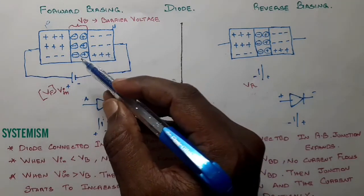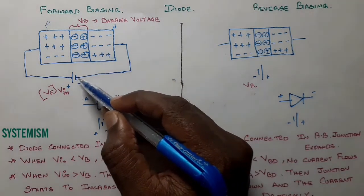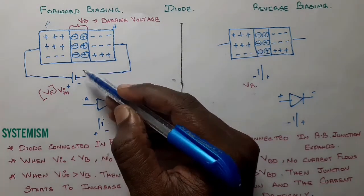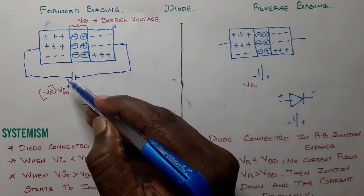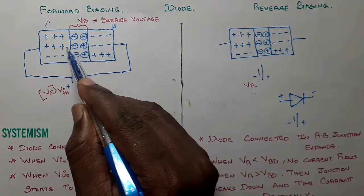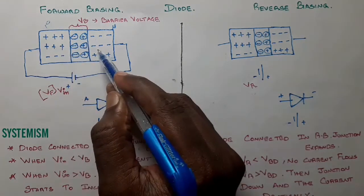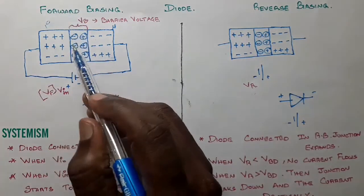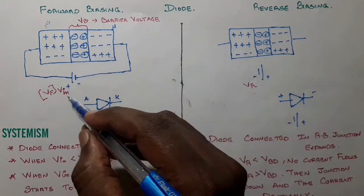When forward voltage is applied, the electrons in the N-type layer are repelled by the negative potential — because negative and negative repel. Similarly, the positive potential repels the positive-charged holes towards the junction. However, at this point the junction acts as a barrier and will not allow the electrons and holes to pass through.